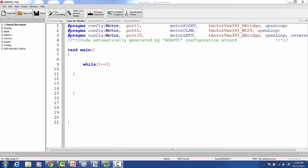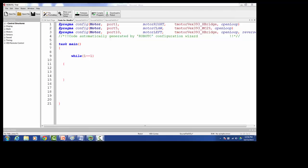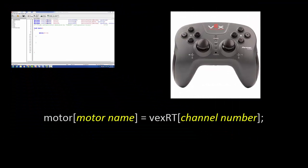Now let's program the joysticks. The template for coding the joysticks looks like this. To map our motors to the joysticks, we place the name of the motor within the square brackets right after the motor command. And then we will place the channel number within the square brackets right after the vexrt command.